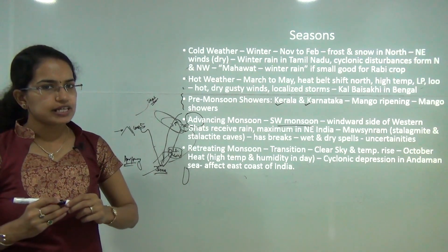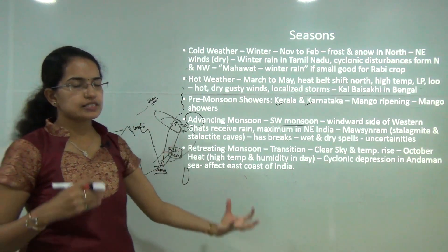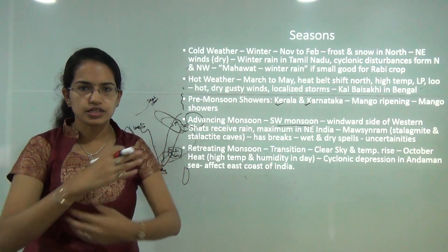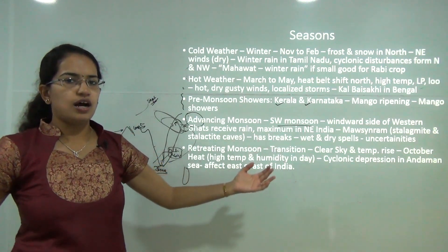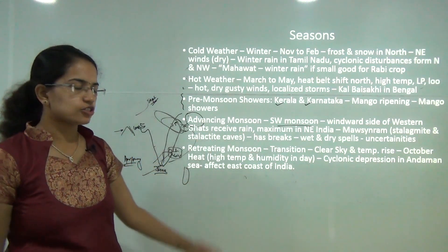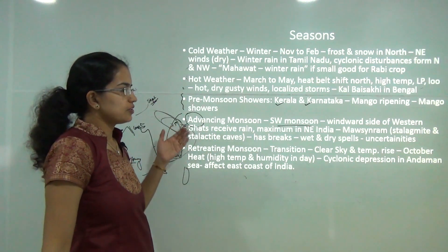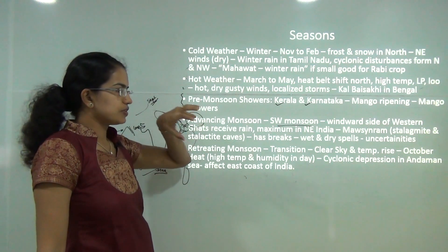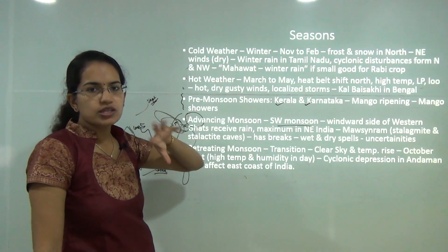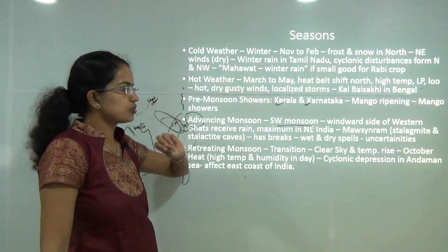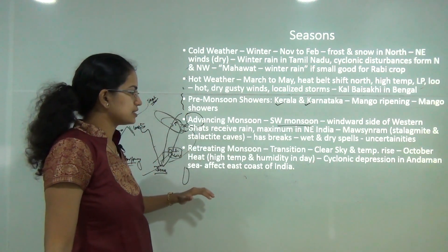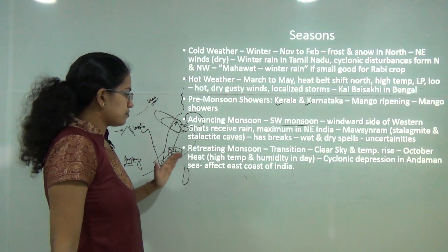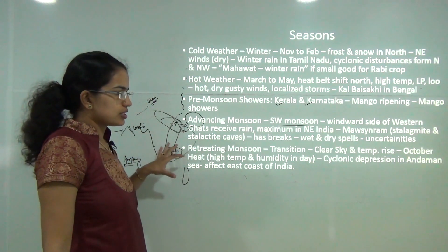There are definitely breaks in the monsoon — alternating wet spells and dry spells, not continuous rainfall for 100 or more days. Mawsynram is the place with the highest rainfall in the world, also known for stalagmites and stalactite caves. Then comes the retreating monsoon which causes winter rainfall in Tamil Nadu.